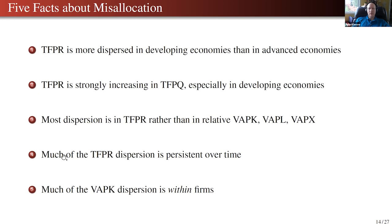Another fact is that much of the dispersion you see is persistent over time, as opposed to being purely transitory. That's also informative about what the wedges might be caused by. Another fact — probably the least well-established but really interesting — is that when people have focused on the value of the average product of capital, that dispersion is mostly within firms.